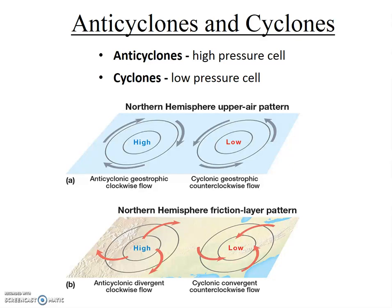We now have a basic understanding of wind direction around high and low pressure cells at the Earth's surface and at higher altitudes. These high and low pressure systems also have names. High pressure cells are called anticyclones and low pressure cells are called cyclones. The top diagrams represent upper atmosphere flow, and the bottom diagrams represent surface winds. The high pressure cell diagrams on the left are anticyclones, and the low pressure diagrams represent cyclones.